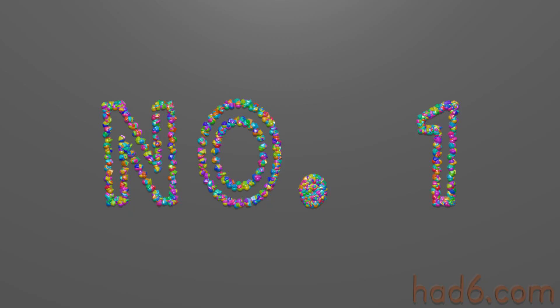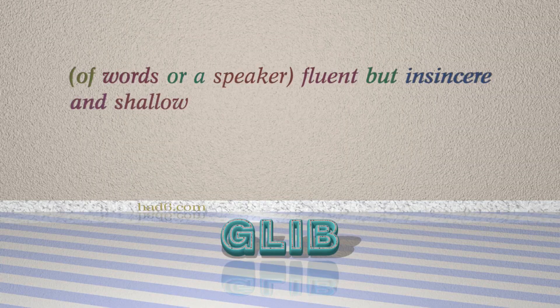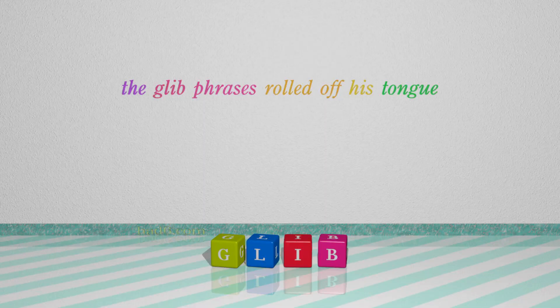Number 1. Glib, which means of words or a speaker: fluent but insincere and shallow. For example, the glib phrase rolled off his tongue.